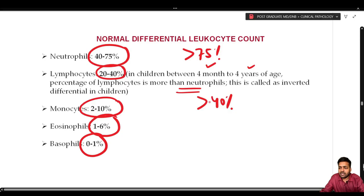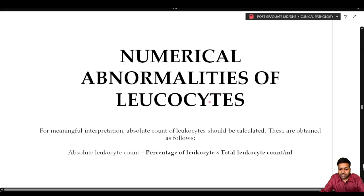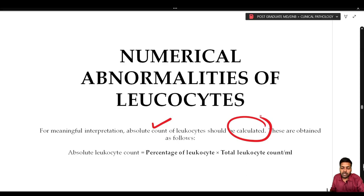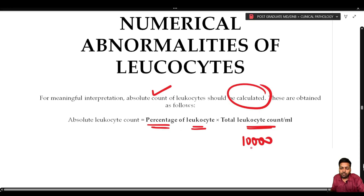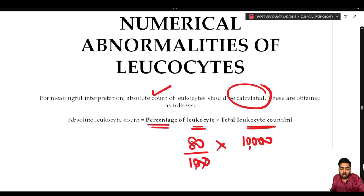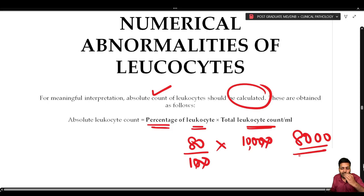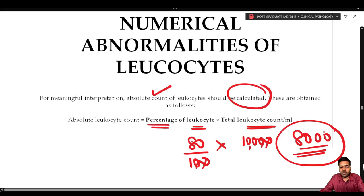For meaningful interpretation, absolute counts of leukocytes should be calculated: absolute count = percentage of leukocyte × total leukocyte count. For example, if total WBC is 10,000 and 80% are neutrophils, the absolute neutrophil count is 8,000 — this constitutes neutrophilia even if the total leukocyte count is normal. That is why absolute leukocyte count carries more weightage.